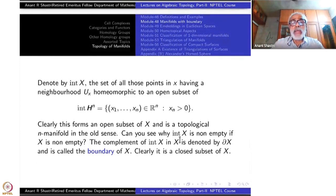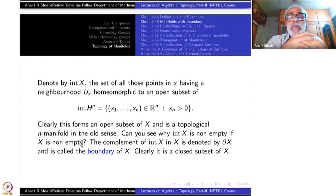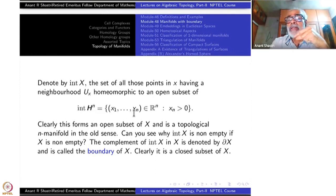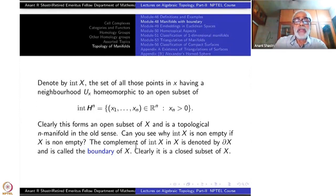Can you see why the interior of X is non-empty if X is non-empty? For the moment something is an open subset of H^n, it intersects with the interior of H^n and that must be non-empty. So therefore that part of the neighborhood will constitute the interior of X. The complement of the interior of X in X is denoted by the boundary of X.